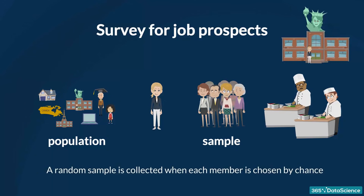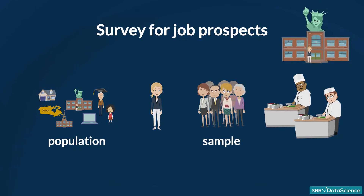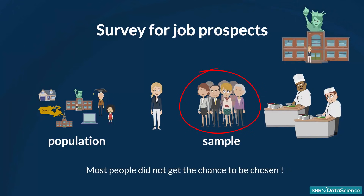A random sample is collected when each member of the sample is chosen from the population strictly by chance. We must ensure each member is equally likely to be chosen. Going back to our example, we walked into the university canteen and violated both conditions. People were not chosen by chance — they were a group of NYU students who were there for lunch. Most members did not even get the chance to be chosen, as they were not on campus. Thus, we conclude the sample was not random.